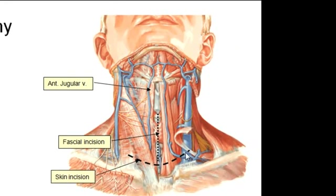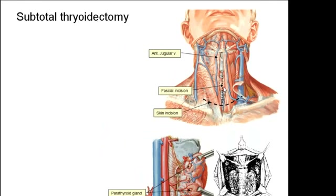Then the platysma and the investing fascia are opened longitudinally. The investing fascia is opened longitudinally in between the strap muscles and in between the anterior jugular veins. Then the pretracheal fascia is divided.